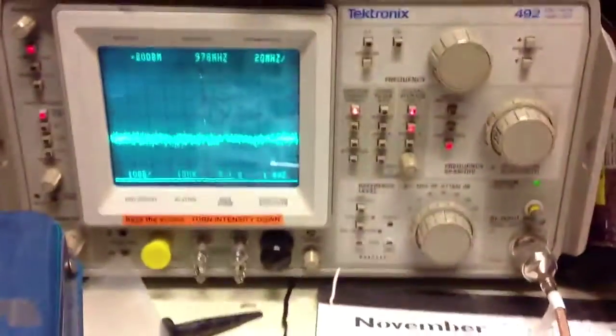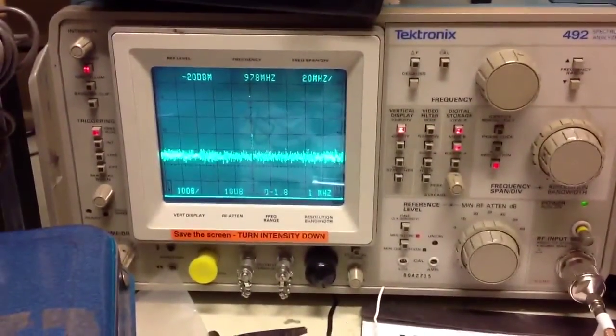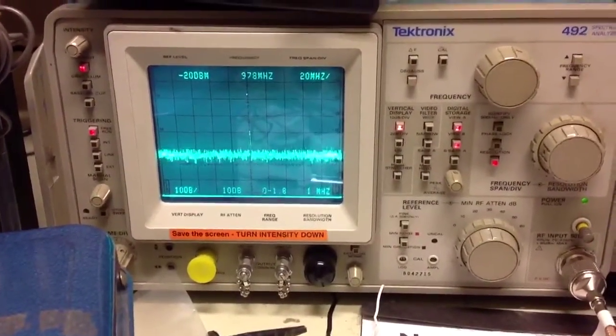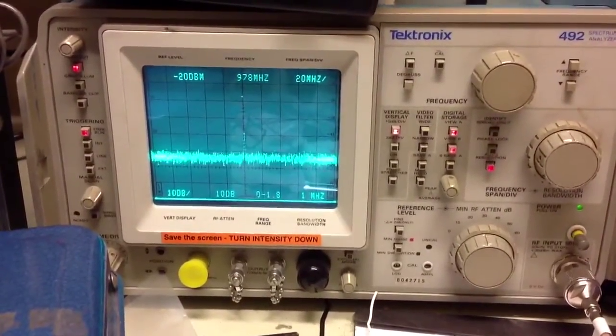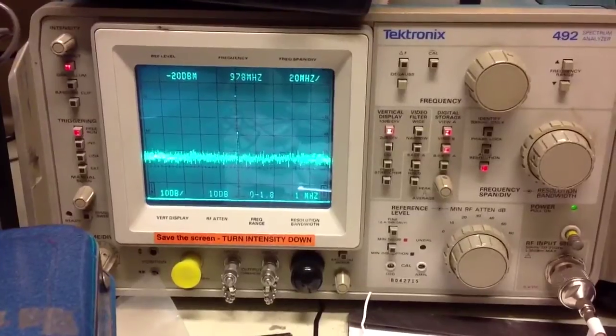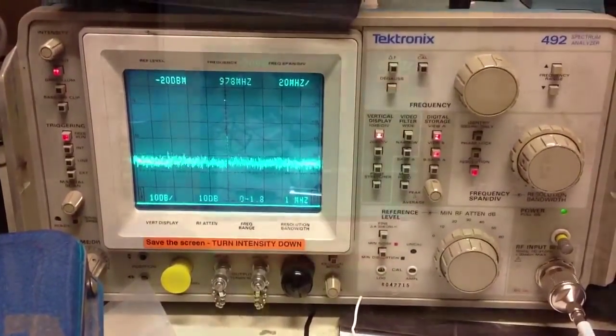And as you can see on the spectrum analyzer, at that frequency, we're showing 10, 20, almost 30 dB of return loss. Next, what we'll do is we'll sweep to see how the antenna resonates and over what band.